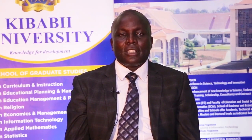Below the Vice Chancellor we have the Deputy Vice Chancellors. In Kibabee University we are privileged to have three Deputy Vice Chancellors. The first is the Deputy Vice Chancellor responsible for Administration, Finance and Development. The second is the Deputy Vice Chancellor for Planning, Partnership, Research and Innovation. Then there is the Deputy Vice Chancellor for Academic and Student Affairs.